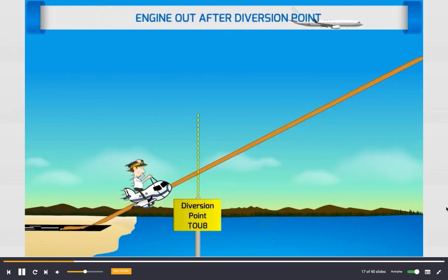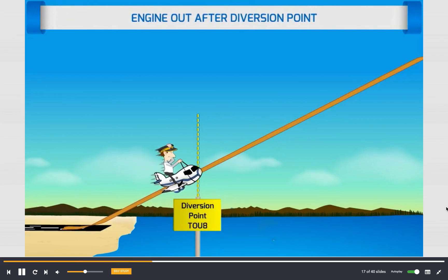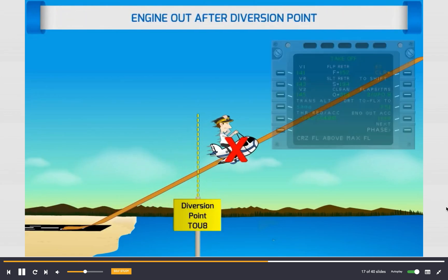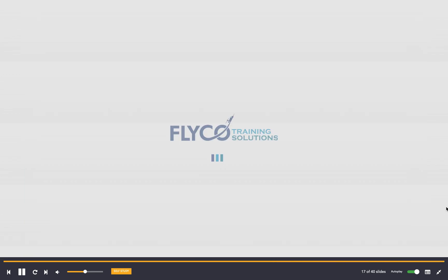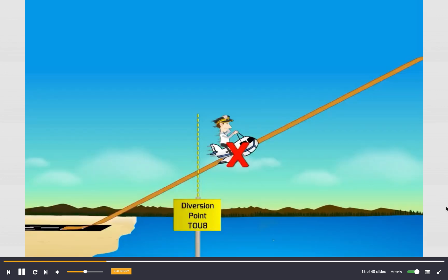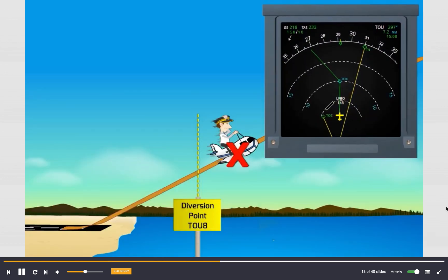Engine out after diversion point: if an engine failure occurs after the diversion point, the MCDU automatically displays the performance page with the engine out clear prompt. No temporary flight plan is created, but the navigation display shows the engine out SID with a continuous yellow line.